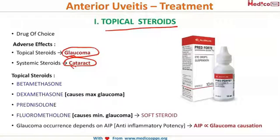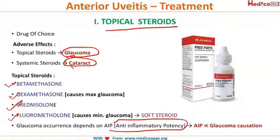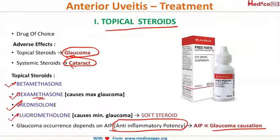The commonly used topical steroids are betamethasone, dexamethasone, prednisolone, and fluorometholone. An important point is anti-inflammatory potency — the stronger the steroid, the greater the risk of glaucoma. Dexamethasone has the highest potency and causes maximum glaucoma risk.